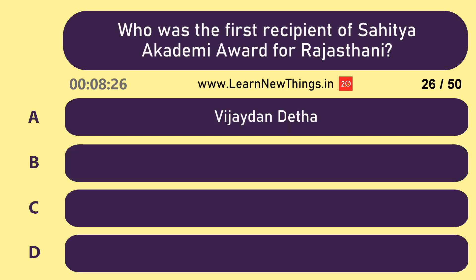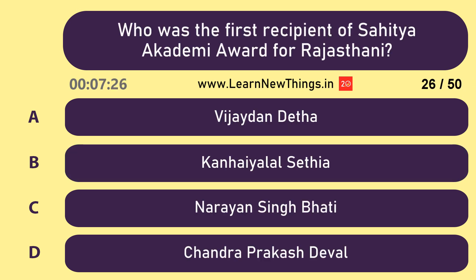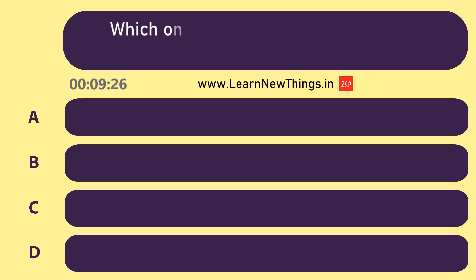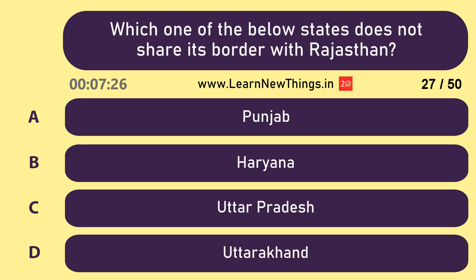Who was the first recipient of the Sahitya Akademi Award for Rajasthani? Vijaydan Detha. Which one of the below states does not share its border with Rajasthan? Uttarakhand.